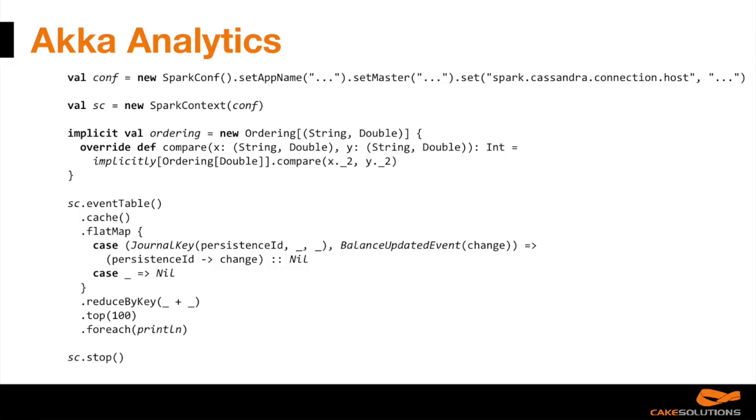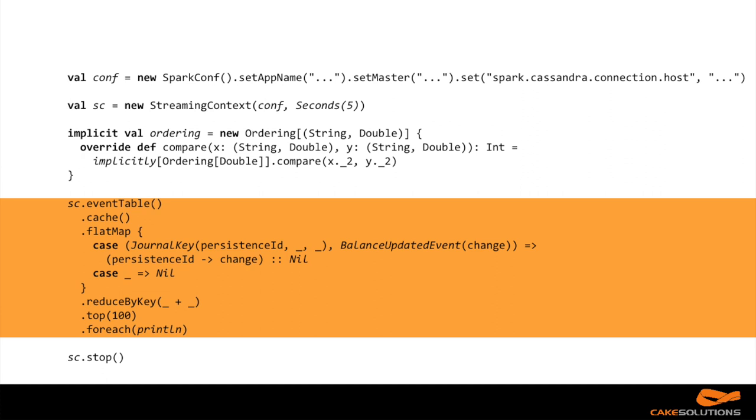There's another project used for reading events from Akka Persistence database — called Akka Analytics, another Martin Krasser project. It uses Apache Spark to read events from Cassandra. The Apache Spark Cassandra connector is pretty efficient — it reads all events from all database tables, all events from all actors. It does a full table scan, but completely in parallel, so it's actually quite efficient. You can then use Spark's API: pick the event types you're interested in, use reduceBy — a distributed reduce — and pick, for example, the top 100 actors with the highest balance on their account from the whole domain of actors.